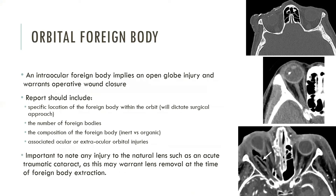An intraocular foreign body implies an open globe injury and warrants operative wound closure. Description of the location—either within the anterior or posterior segment—is important as this dictates the surgical approach. Identifying the composition of the foreign body impacts the surgeon's decision on removal. An inert intraocular foreign body such as metal or glass may be removed or left in place based on its location and the patient's symptoms. Surgical removal is typically attempted for all organic foreign bodies such as wood, as they carry a higher risk of endophthalmitis and orbital cellulitis. The images demonstrate preseptal glass fragments, an intraocular metallic foreign body, and a hypoattenuating linear foreign body in the right orbit with open globe injury and orbital fractures.